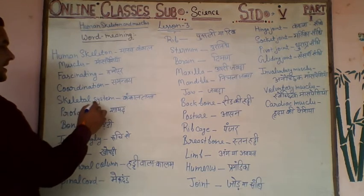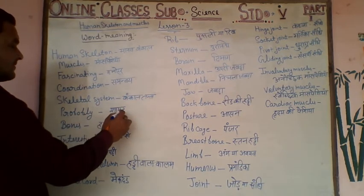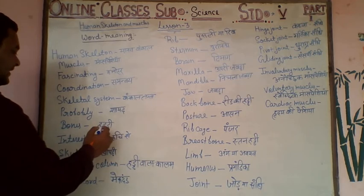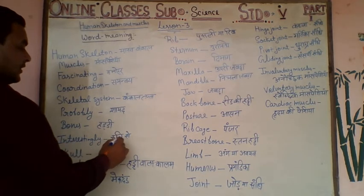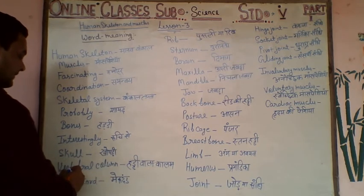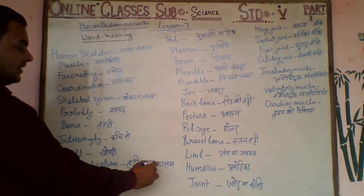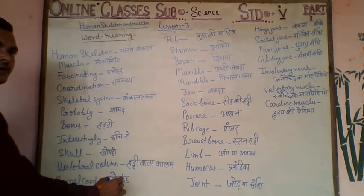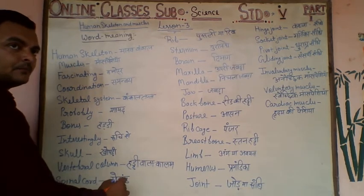Skeleton system is Kankal Tantra. Probably, sir. Bones is Haddi. Strongly, Ruchi Se. Skull is Hokadi. Vertebral column is Haddiwala column. Spinal cord is Merudan.